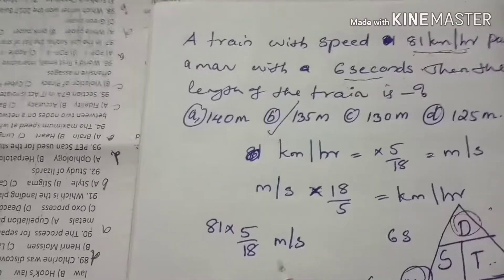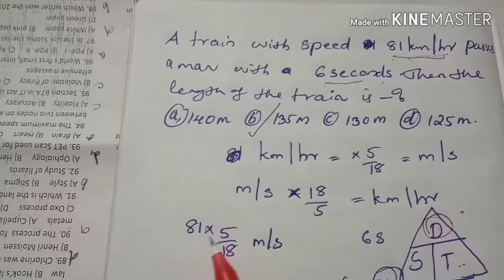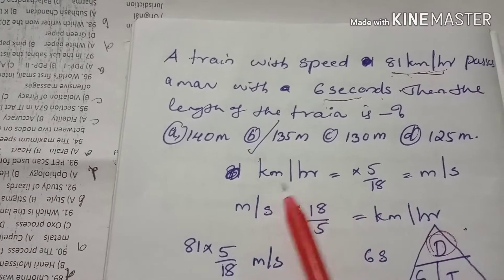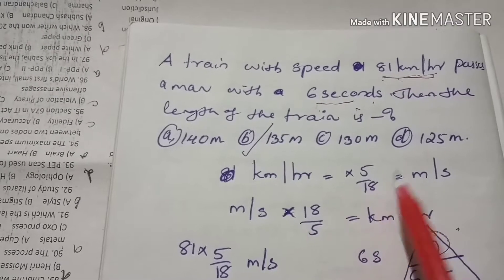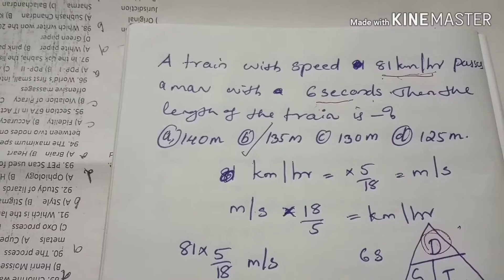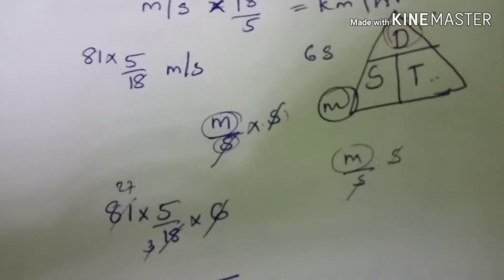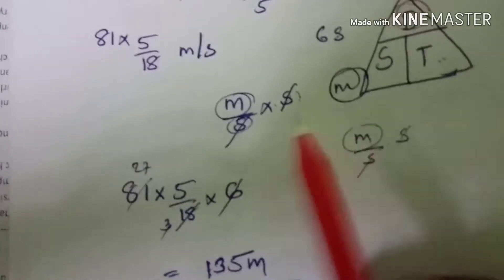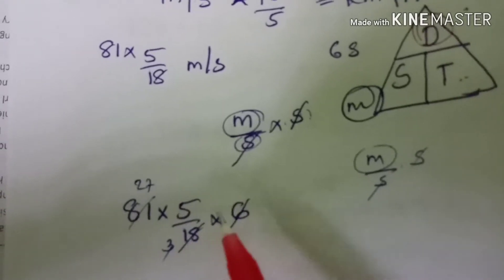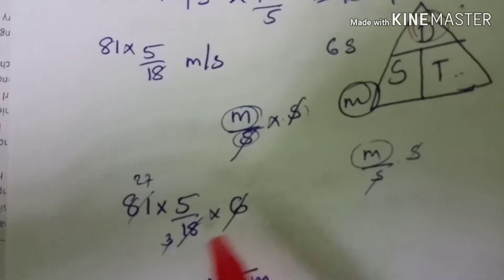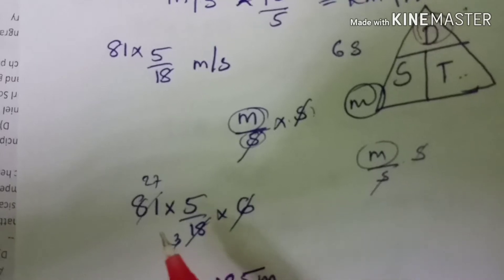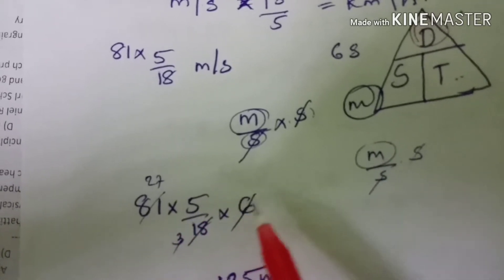So we will convert the speed: 81 kmph gives us approximately 22.5 meters per second. We are given 6 seconds. Now using speed and time, we calculate distance.